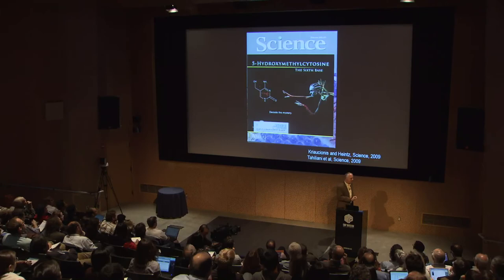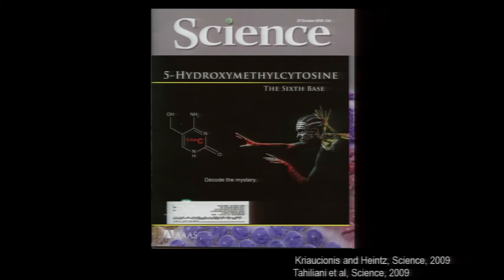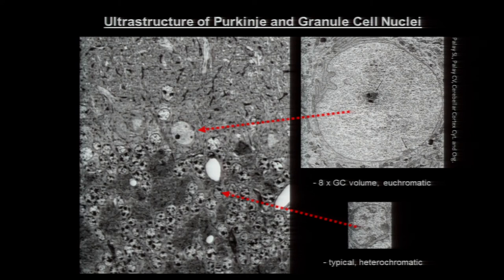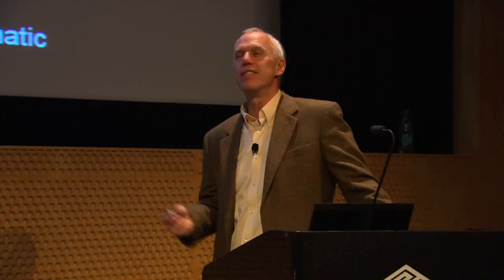I want to close with an interesting finding we made a few years ago — Anjana Rao's lab also made this discovery — the discovery of a sixth base in the genomes of neurons: hydroxymethylcytosine. I was interested in a fundamental question in neuroscience: here's a cerebellar cortex in EM, with a Purkinje cell nucleus that's huge and euchromatic with no condensed chromatin, yet it regulates gene expression very precisely. A more typical nucleus is heterochromatic, also regulates gene expression nicely, but is about a fifth the size in volume of a Purkinje cell nucleus. Why is this such a huge euchromatic nucleus? That's what I've been interested in since I saw these pictures in the 90s.